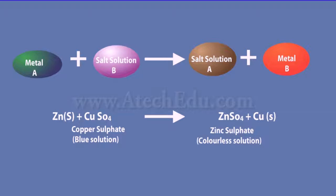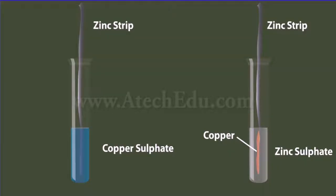Metals react with solutions of other metal salts. Reactive metals can displace less reactive metals from their compounds in solution or molten form; such reactions are called displacement reactions. If metal A displaces metal B from its solution, it is more reactive than B. If we take a solution of copper sulfate and put a strip of zinc metal in it, the blue color of the copper sulfate solution fades away gradually and copper metal is deposited on the zinc strip — this means zinc is more reactive than copper. If we put gold or platinum in a copper sulfate solution, copper is not displaced because both gold and platinum are less reactive than copper and do not give electrons to reduce copper ions into copper metal.